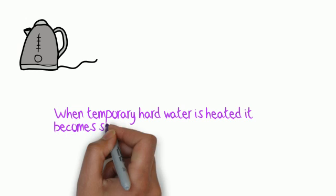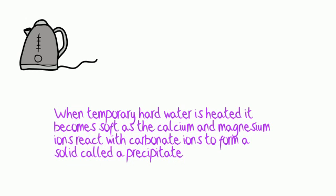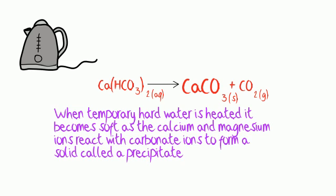When temporary hard water is heated, it becomes soft as the calcium and magnesium ions react with carbonate ions to form a solid precipitate. This is called scale and is a hard crust which forms inside kettles and hot water pipes and cylinders. This wastes energy as scale is a poor conductor of heat and can cause heating elements to fail.